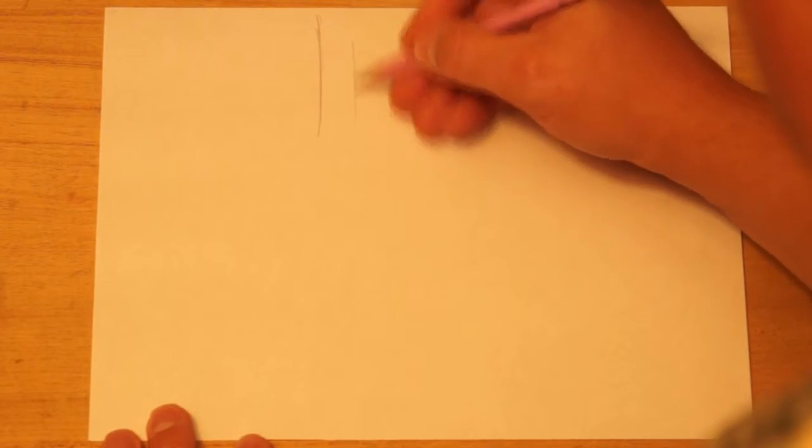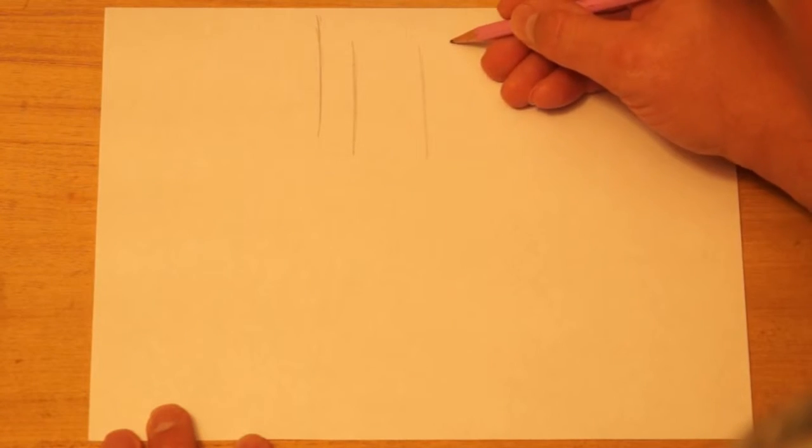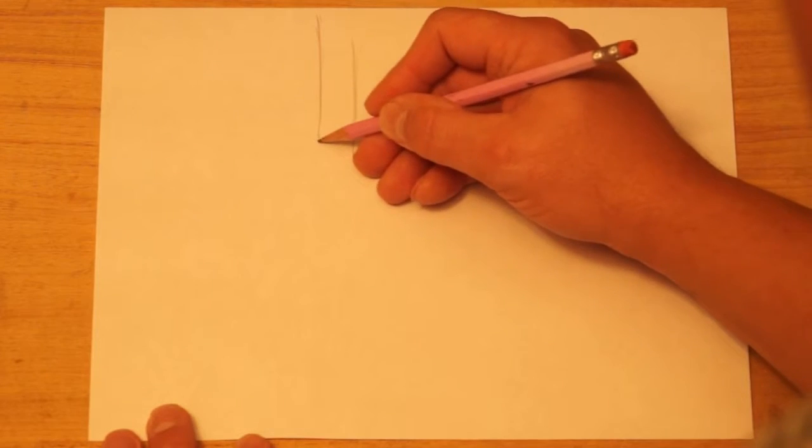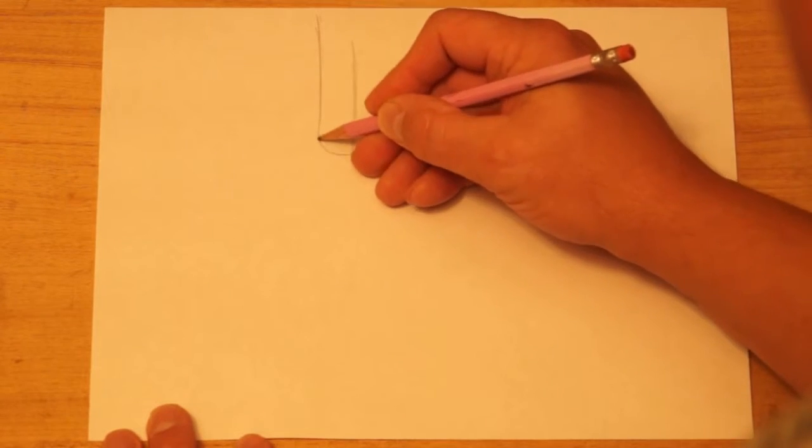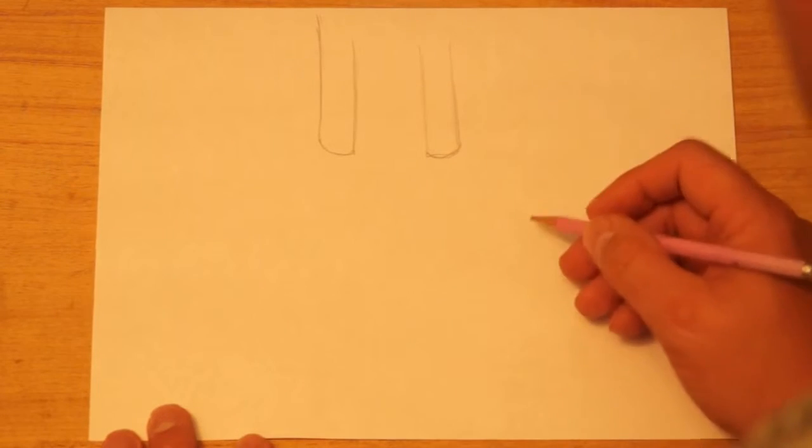Okay, we're going to start this drawing by drawing two legs. I'm going to make it look like somebody is wearing these flippers. So I make two legs, then at the bottom of the legs I want to make curves. This is where they're actually wearing the flippers.